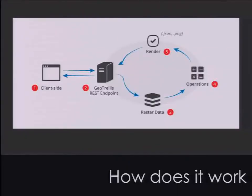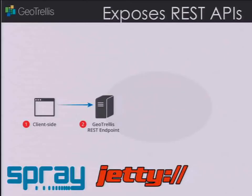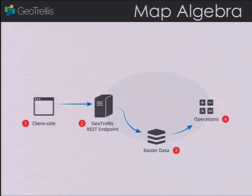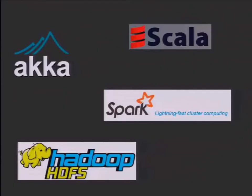So how does GeoTrellis work? There are two modes you can use GeoTrellis. One is around doing real-time low-latency processing. The second is around cluster-based processing. In the real-time example, from the client side — whether a mobile device or a web browser — a request goes out to the GeoTrellis REST endpoint. We began with Jetty, but we've been slowly replacing it with Spray, which is a nice toolkit for generating REST endpoints. That REST endpoint then calls a set of raster data that may be tiled across multiple machines or maybe on a single machine. That raster data is then consumed by a series of operations.